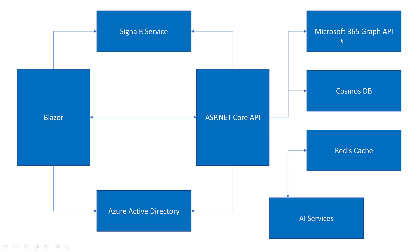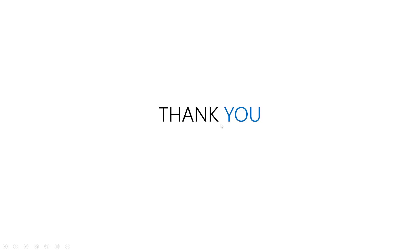We'll also cover how to take advantage of Microsoft 365 to integrate your app with Office, OneDrive, and similar services, as well as AI services to add intelligence to your apps. The goal of this course is to build a Blazor client with an ASP.NET Core API, leveraging Azure services like SignalR Service, Azure Active Directory for authentication and authorization, Redis for caching, and Cosmos DB. In every video we'll cover a part of this, building a full application that works well, deploying it and making it available to customers.